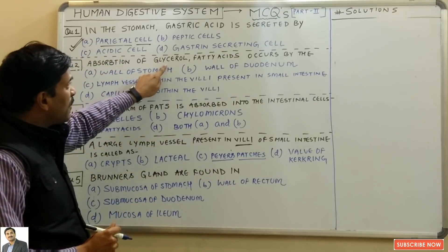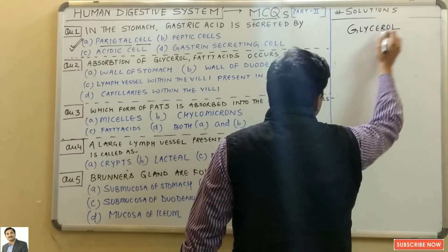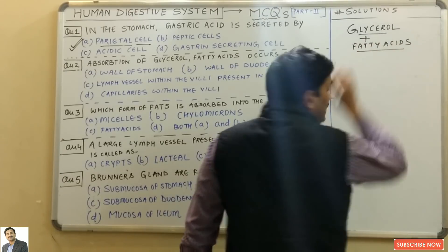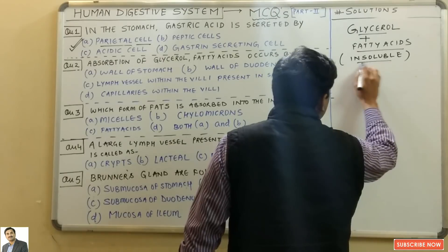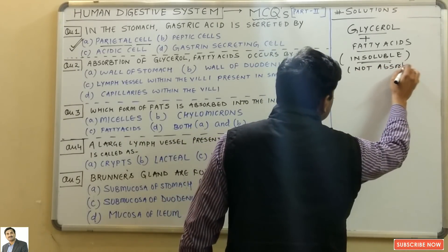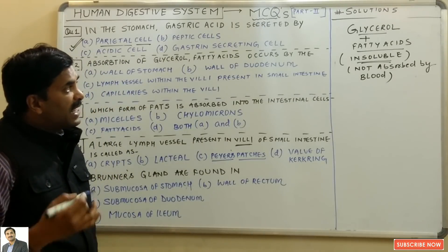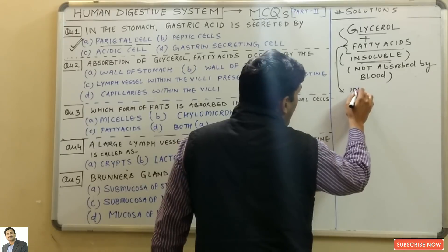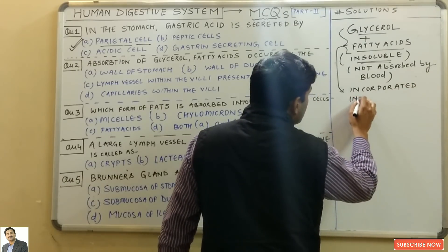Question two: absorption of glycerol and fatty acids occurs by? Glycerol and fatty acids are fats, and they are insoluble — hence not absorbed directly by the blood. The question arises: how are they absorbed? These fats are first incorporated into small droplets.